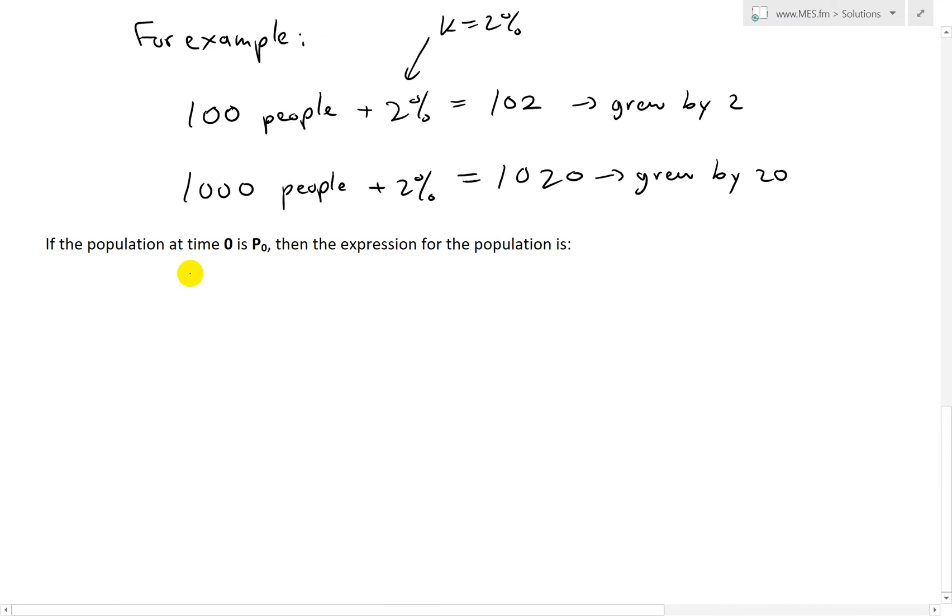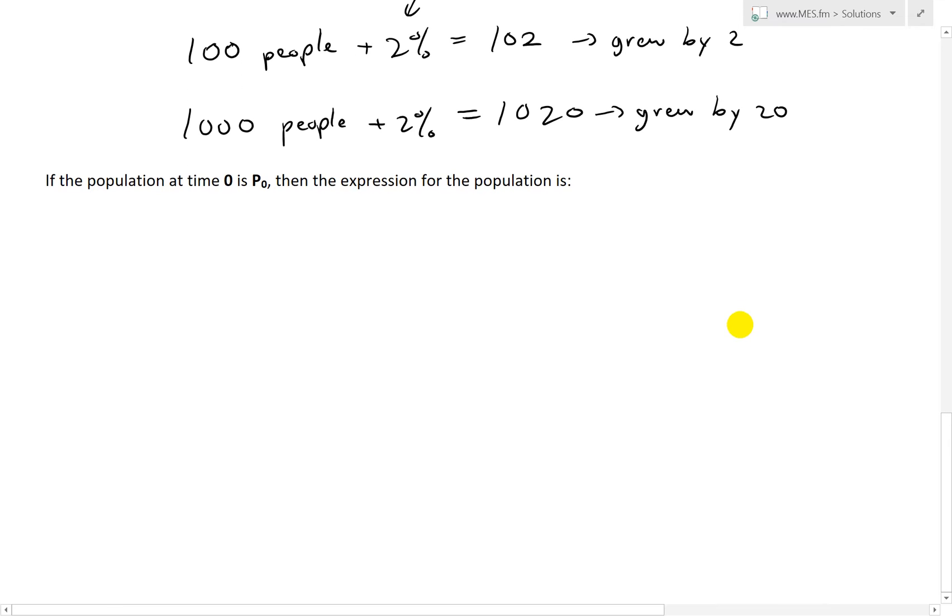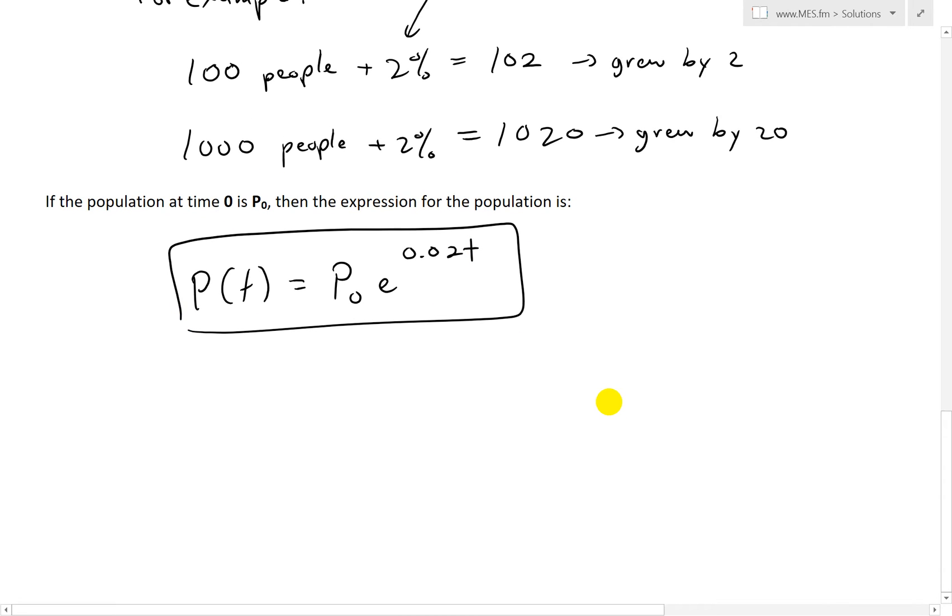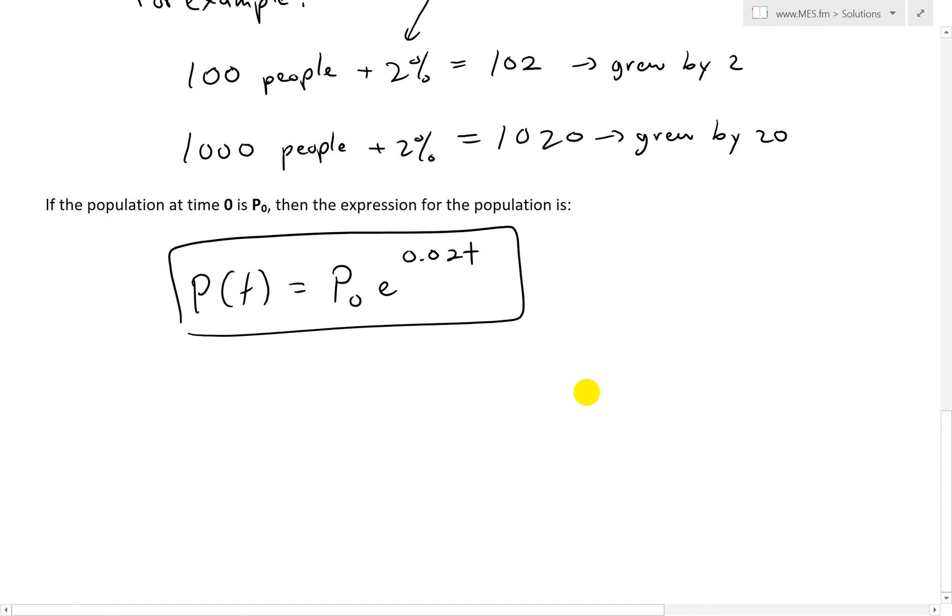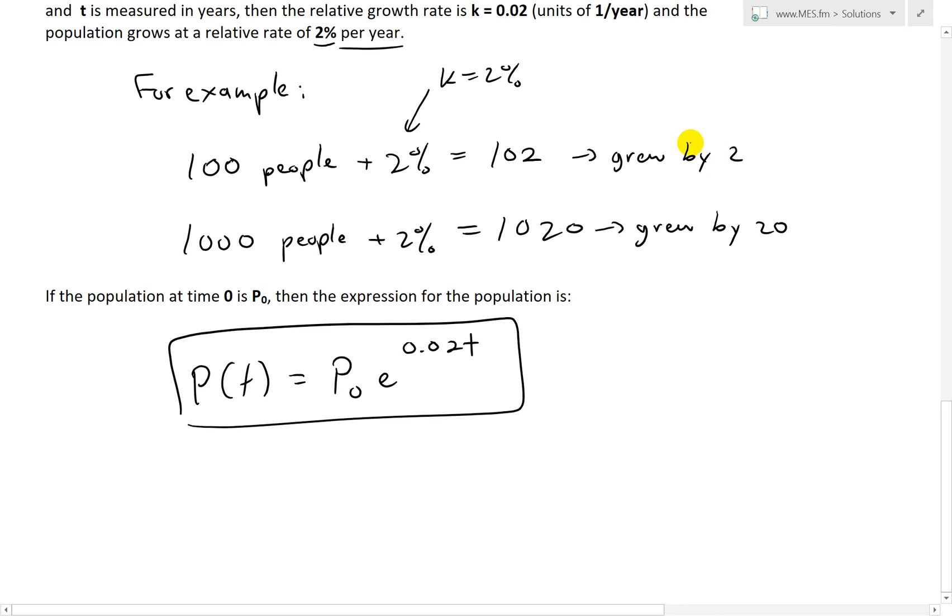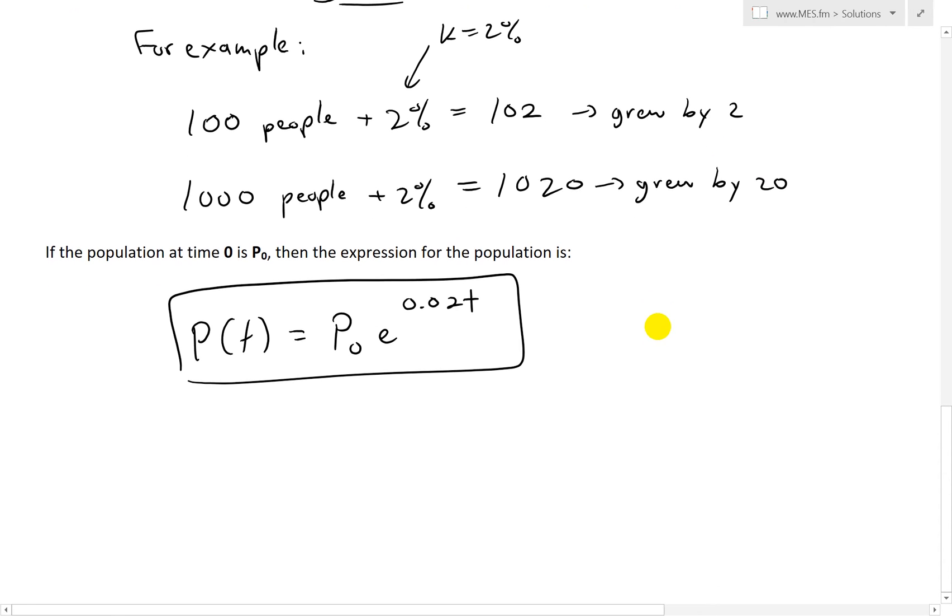And finally, if the population at time 0 is P(0), then the expression for the population is P(t) equals P₀ e to the 0.02t. And this is saying that the population increases exponentially. That's because of this relative increase is constant, so if you had a small population you're growing by 2, and then you increase the population, you're still growing relatively the same, but now it's 20, so you're increasing by much more than just 2. So it's not a linear growth, it's exponential.